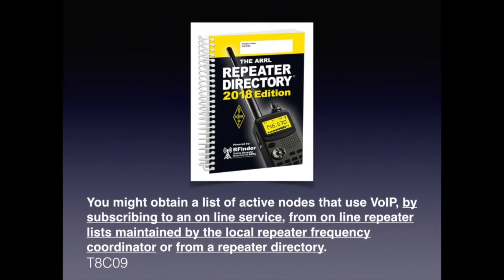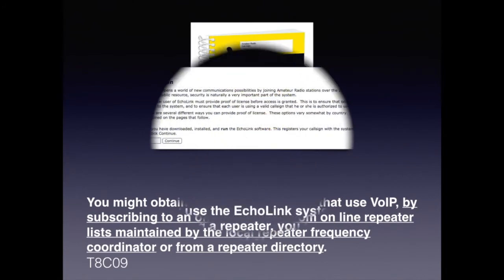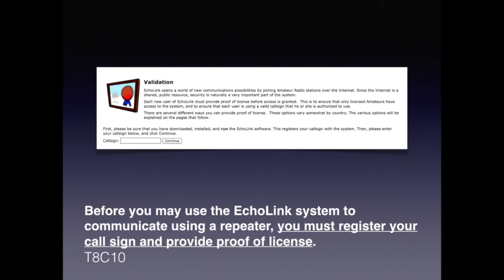Sometimes we don't always have access to the internet to find a list of nodes that use VoIP, but there are repeater books available. For the exam, know that you might obtain a list of active nodes that use VoIP by subscribing to an online service, from an online repeater list maintained by a local repeater frequency coordinator, or from a repeater directory. Because of legal constraints, it's necessary to validate that you have a license prior to connecting to a service like EchoLink. For the exam, before you use the EchoLink system to communicate using a repeater, you must register your call sign and provide proof of license.